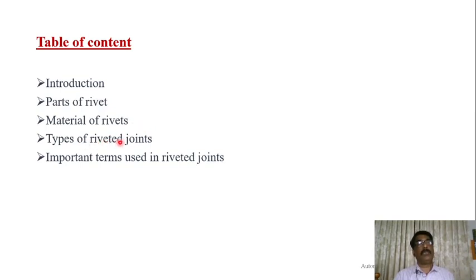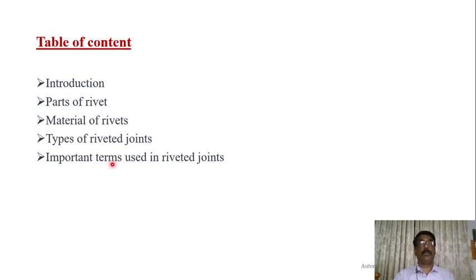The next topic is types of riveted joints. We will study different types based on how the parts are connected, such as butt joint, lap joint, single strap butt joint, and double strap butt joint, with sketches. The last topic covers important terms used in riveted joints, such as pitch, back pitch, and margin — terms that are very important when designing a riveted joint.